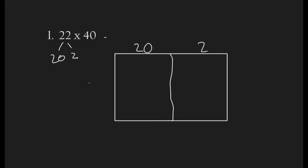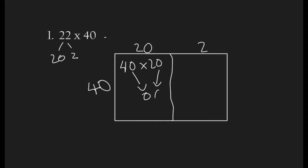Then we're going to bring the 40 over here. So now you're going to multiply 40 times 20. That's still a pretty huge number, but if you notice there are two zeros so we don't have to worry about those zeros — let's just bring the zeros down. Then all we have to worry about is 4 times 2. What is 4 times 2? 6. So there's a 6 right there.